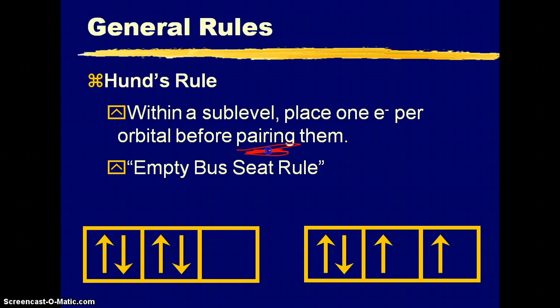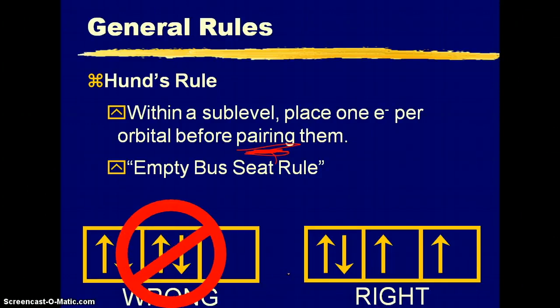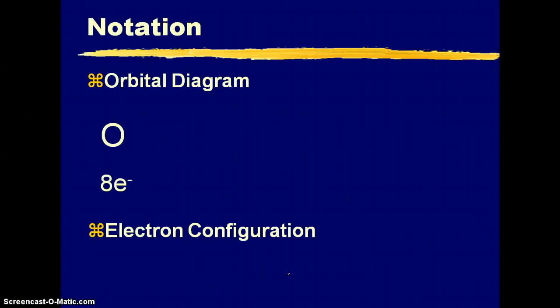The empty bus seat rule, you always go to the empty seat first, and then if no empty seats are available, you go to the one with one of them. So you see here, it was filled based on one up, one down, which is not correct. Everybody gets one, and then somebody gets a pair, so the second picture is the correct one.